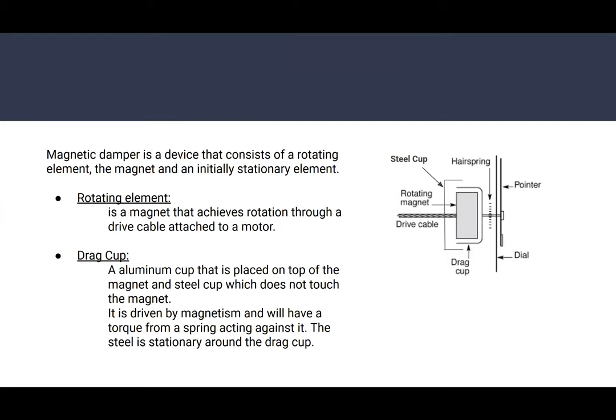The magnetic damper is a device that consists of a rotating element, the magnet, and an initially stationary element. The rotating element is a magnet that achieves rotation through a drive cable attached to a motor. Our drag cup is an aluminum cup that is placed on top of the magnet and steel cup which does not touch the magnet. It is driven by magnetism and will have a torque from a spring acting against it. The steel is stationary around the drag cup.